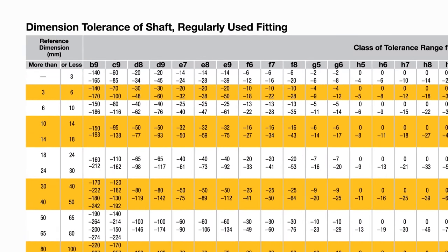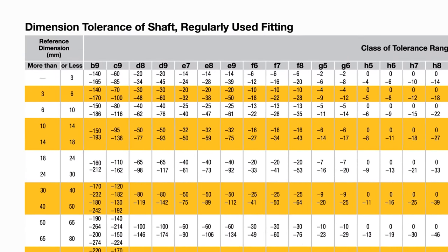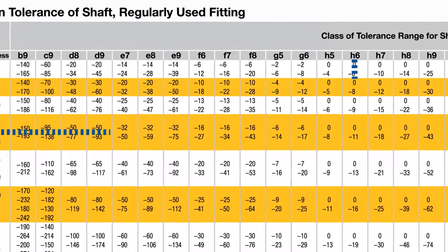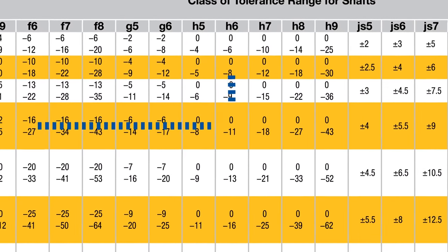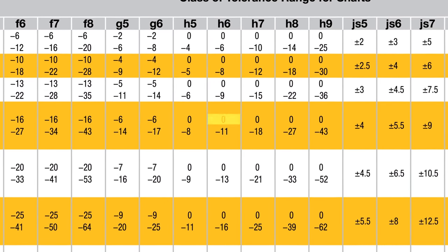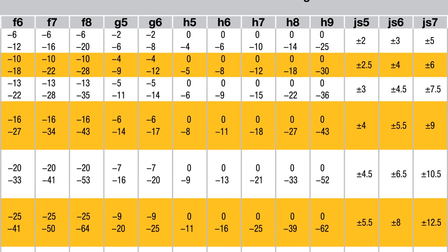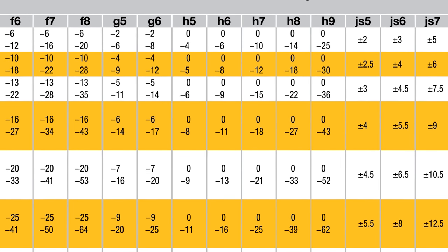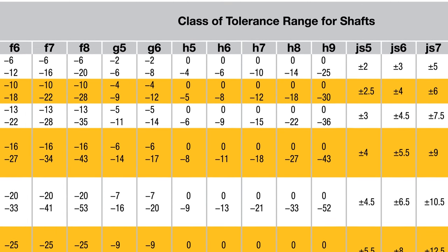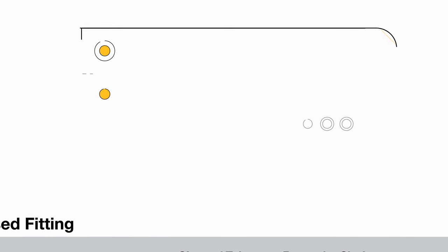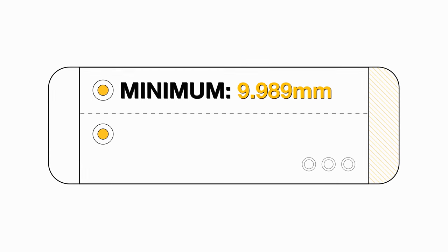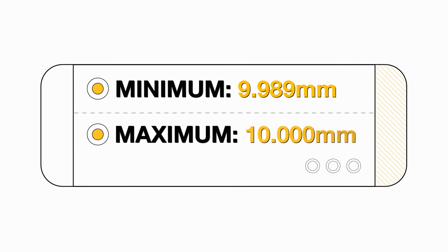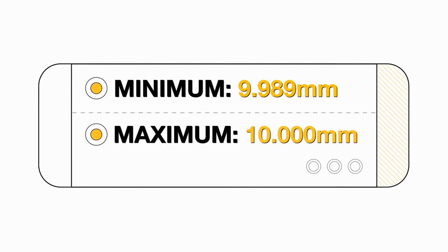If we look at a 10mm shaft with an H6 tolerance — 10H6 — we can see the expected tolerance is no larger than the basic size, but is capable of being 11 microns under 10mm. This brings the expected minimum to 9.989mm and the maximum to 10.000mm.